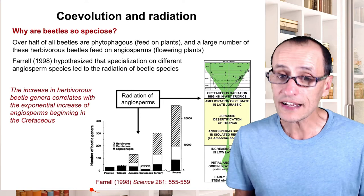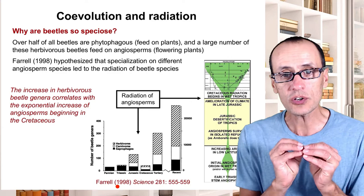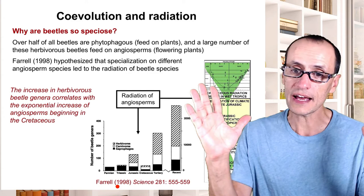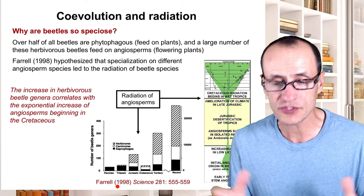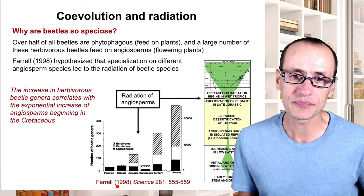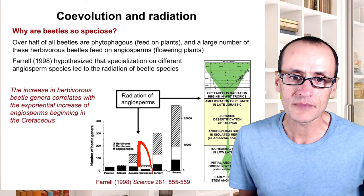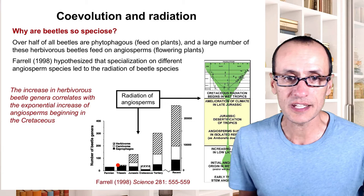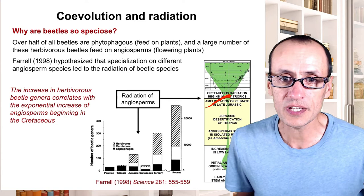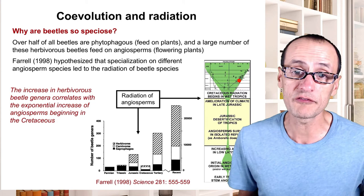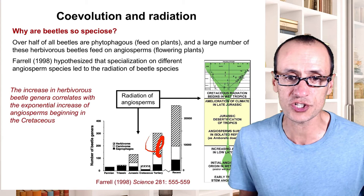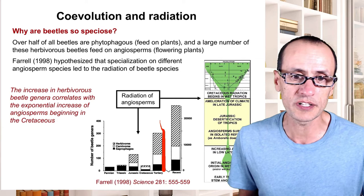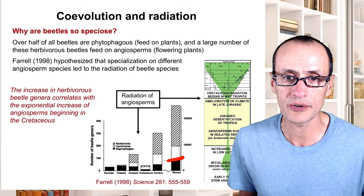A classic study by Brian Farrell at the University of Maryland looked at the timing of the diversification of plants as inferred through the geologic record — looking at fossils. Right around the Jurassic, approximately 60 million years ago, there was a very rapid period of expansion increasing the number of species of flowering plants. There was also a period of increased diversification during the Tertiary, a much more recent period.